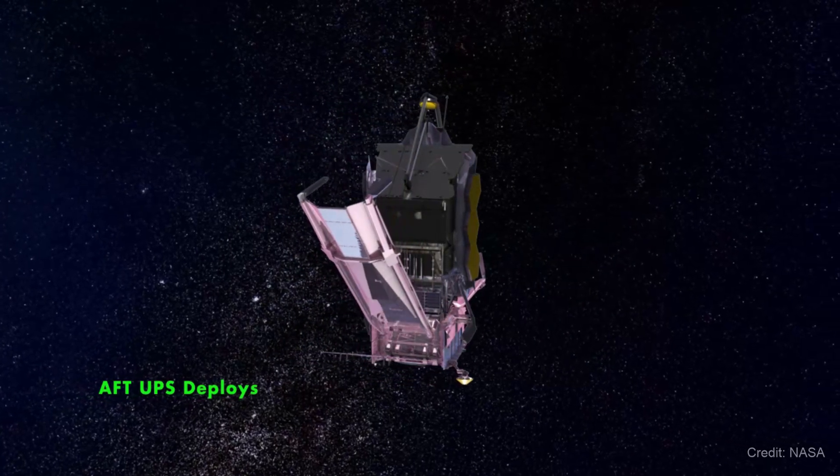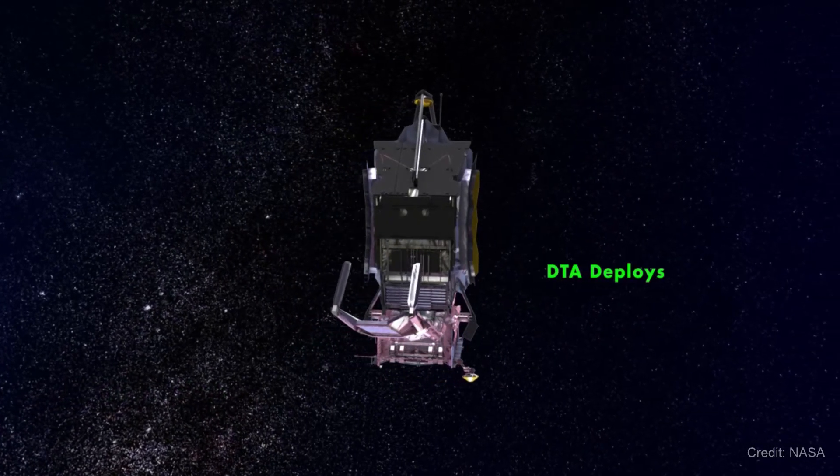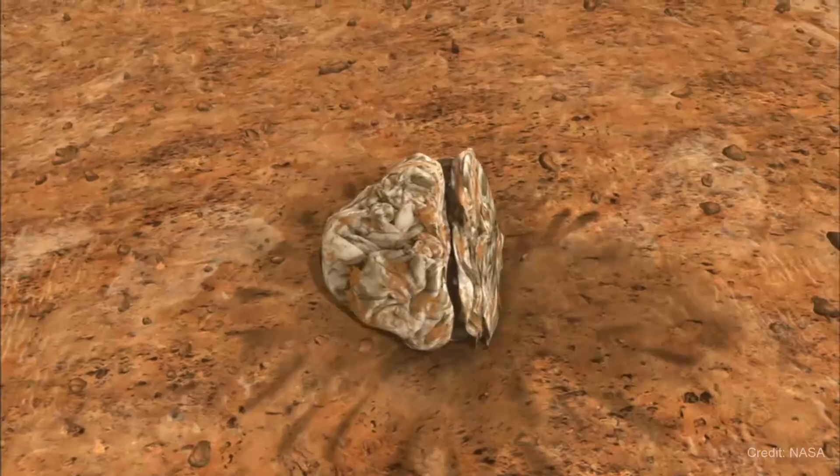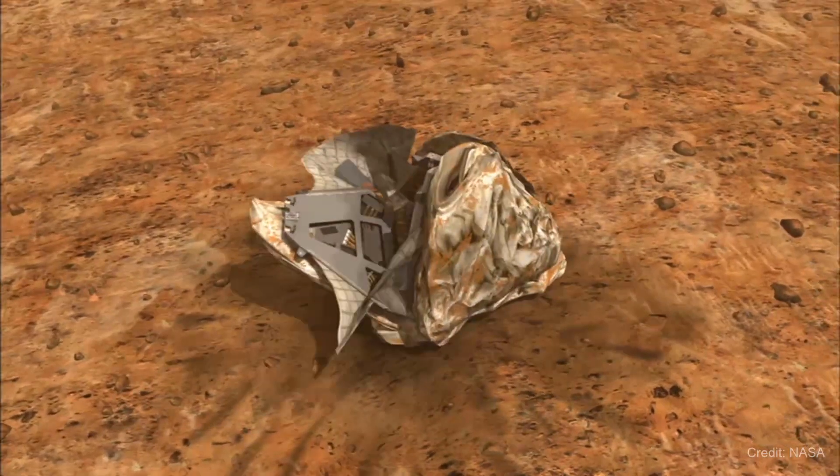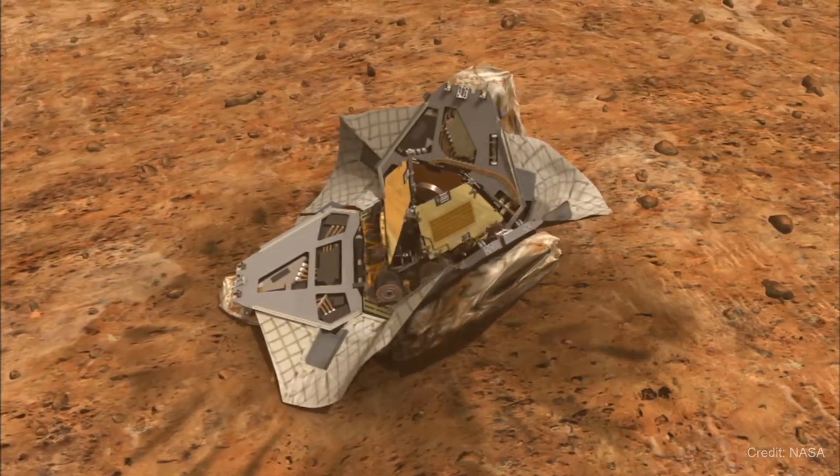The fact that without power and communication, a spacecraft is totally useless makes the unfolding process that much more critical. The unfolding process is taken to a whole other level when rovers are involved. For this video, however, we'll only talk about spacecraft unfolding.